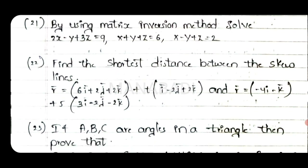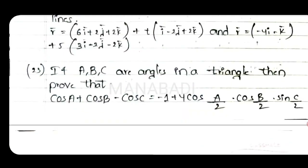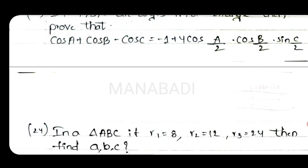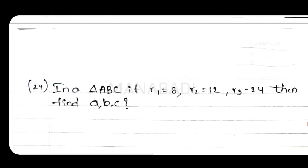Find the shortest distance between the lines. Twenty-third question: if A, B, C are the angles in a triangle, then prove that cos A plus cos B minus cos C equals minus 1 plus 4 cos A by 2 cos B by 2 sin C by 2. Twenty-fourth question: in triangle ABC, if r1 equals R2 equals 12 and R2 equals 24, then find the ABC values.